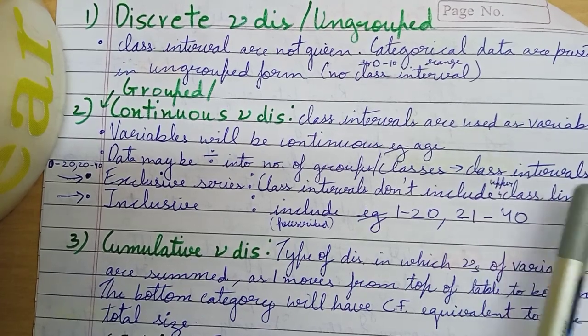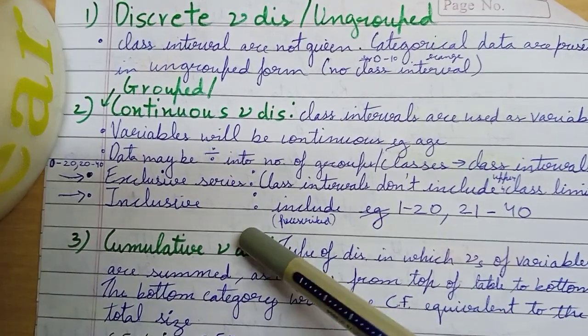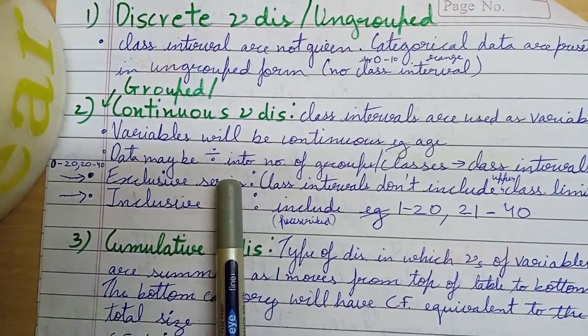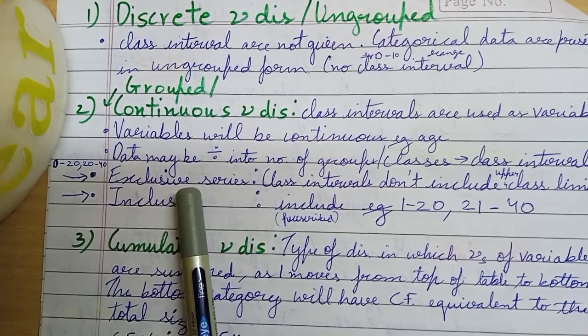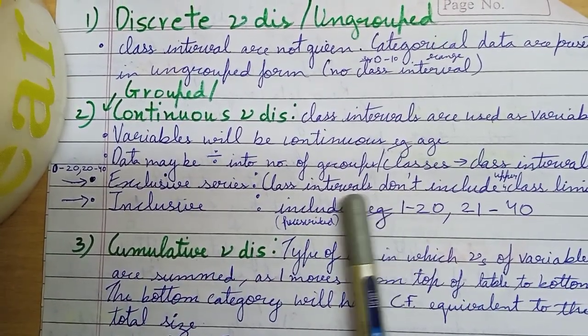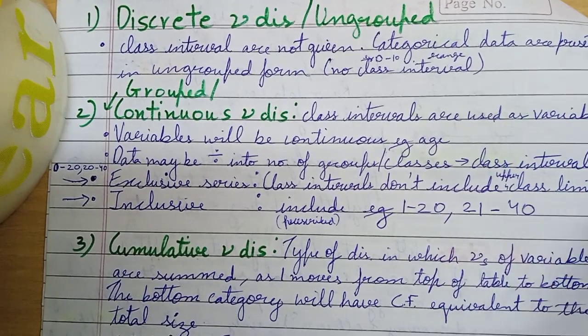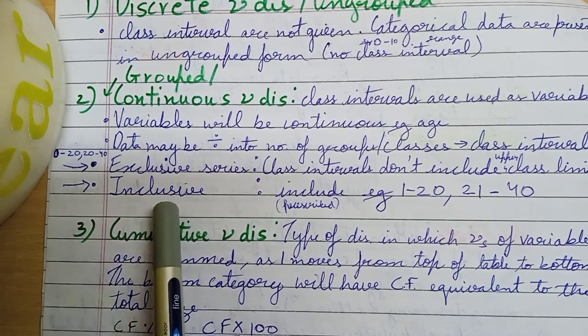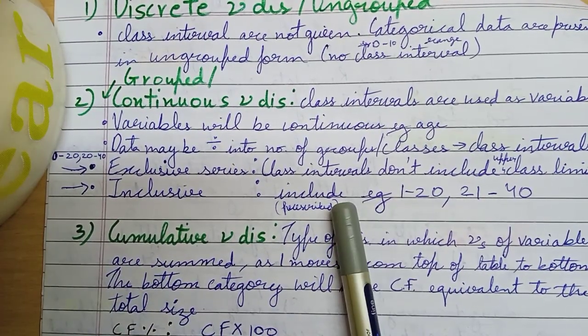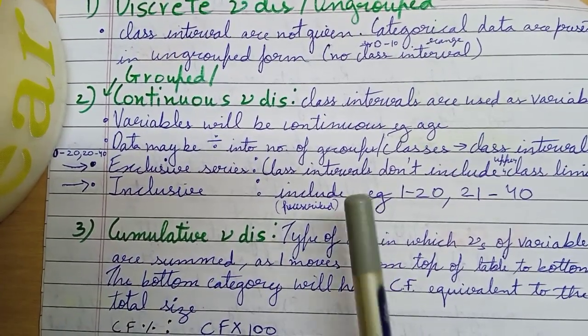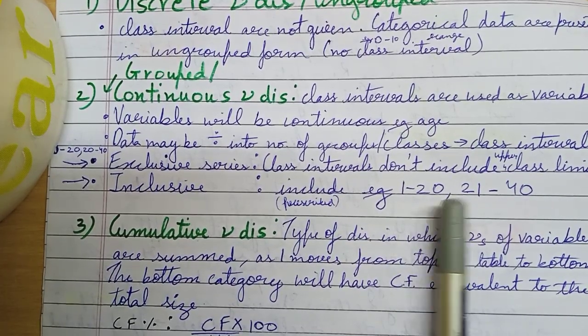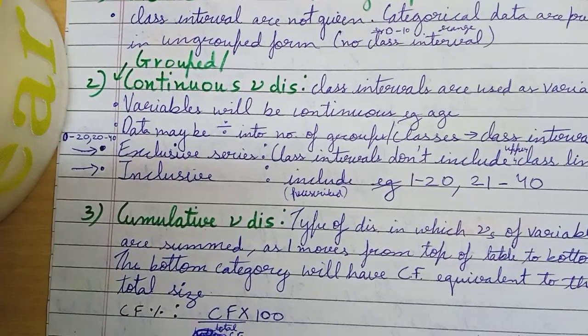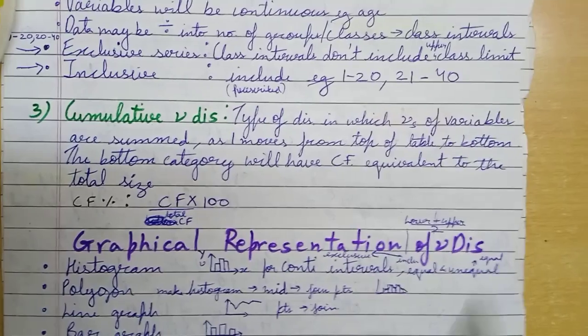Or class intervals. These are two types: exclusive and inclusive. In exclusive, the class interval has no upper class limit included, for example 0 to 20, 20 to 40. Then inclusive - this includes upper class limit like 1 to 20, 21 to 40. And lastly, the last type: